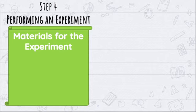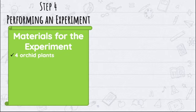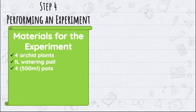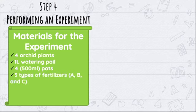In our situation, our materials would be four orchid plants. Why four? We only have three fertilizers, but we need to add one more setup — a plant with no fertilizer — to test if the fertilizers are effective. We also need one liter watering pail, four 500 ml pots (they should be the same size), three types of fertilizers — A, B, and C — and a ruler to measure the height of the plants. I will tell you in the next lecture video why similar characteristics for all experiment setups are needed.